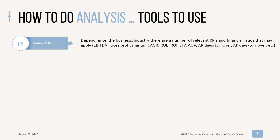Number five is metrics and ratios. This is a really big bucket and depends a lot on the business, the industry, and the size of your company. You'll have relevant KPIs and financial ratios that apply to you — things like EBITDA, gross margin percent, CAGR (compounded annual growth rate), ROE, ROI. SaaS companies will have things like LTV and average order value. All companies will have things like AR days or AR turnover, AP days and turnover. These metrics and ratios can help teach you about your business.